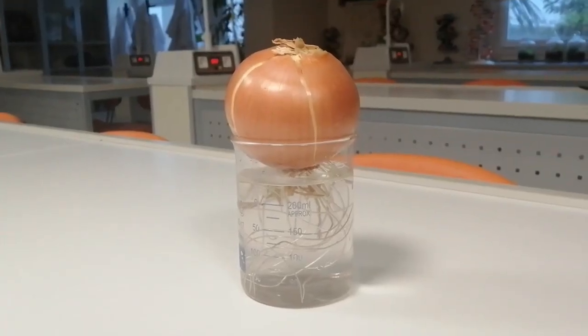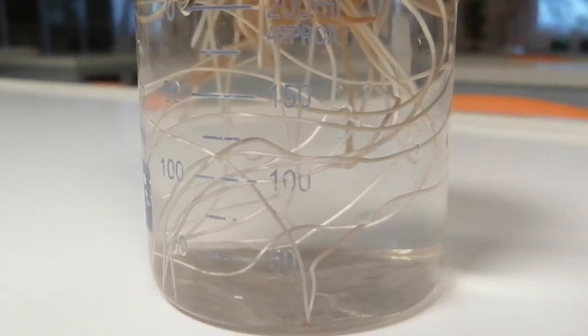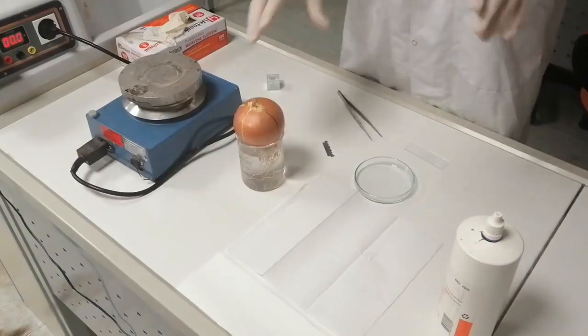Let's start the procedure. Previously, we gave time to onion roots to grow between four to five days in a water-filled beaker.